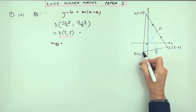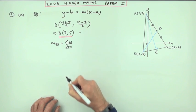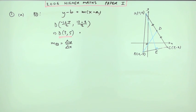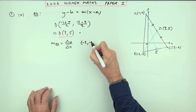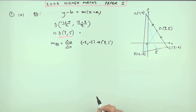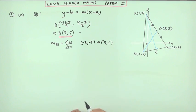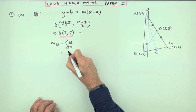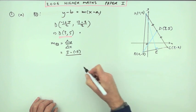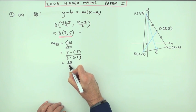Now you can get the gradient. The gradient of BD is the difference in the Y coordinates over the difference in the X coordinates. I'll add point (3, 5) to my diagram. Going from (negative 2, negative 5) to (3, 5): Y2 minus Y1 gives 5 take away negative 5, which is 10; X2 minus X1 gives 3 take away negative 2, which is 5.